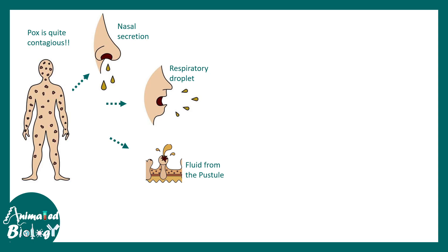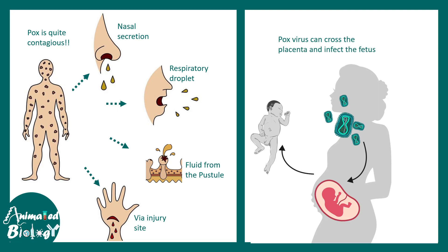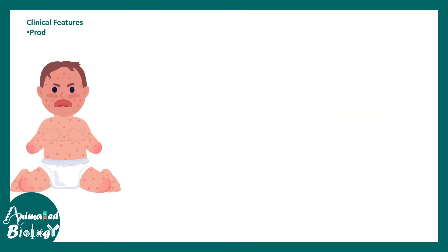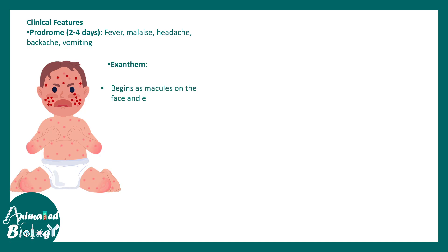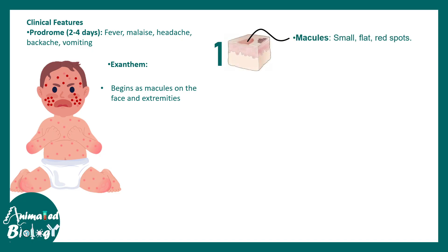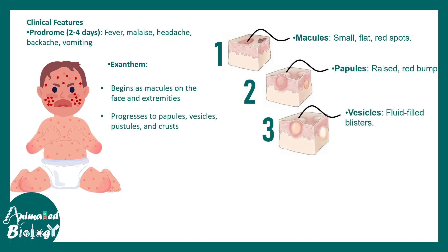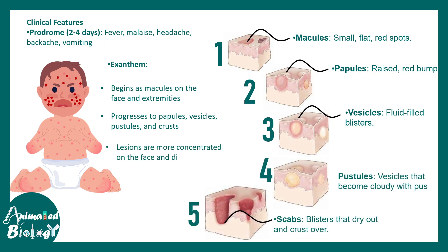Spread also occurs via nasal secretions and respiratory cough; fluid from pustules can allow spread, and entry via injury sites is also possible, more common among healthcare workers. The poxvirus can theoretically cross the placenta, but incidence is rare. There is a prodromal phase of two to four days with fever, malaise, headache, and vomiting. The rash begins as macules on the face and extremities, progressing through papules, vesicles, pustules, and scabs — but importantly, only one category of rash is found all over the body at any given time point.